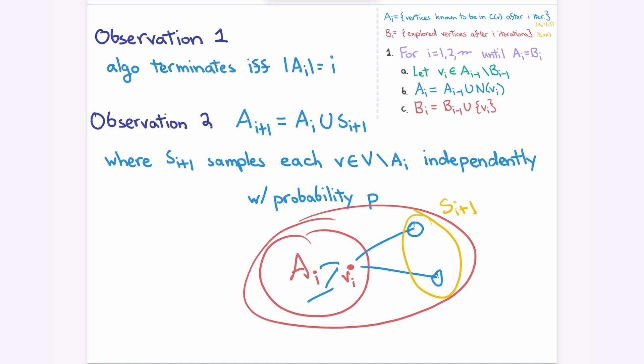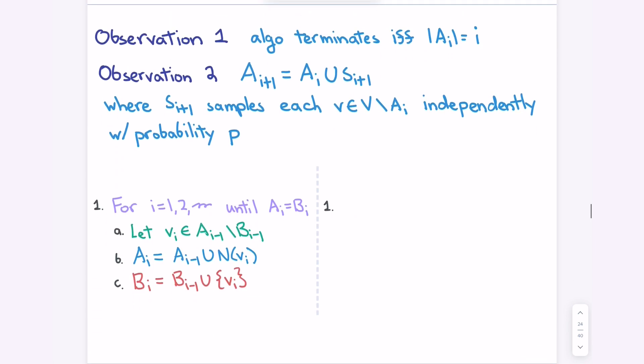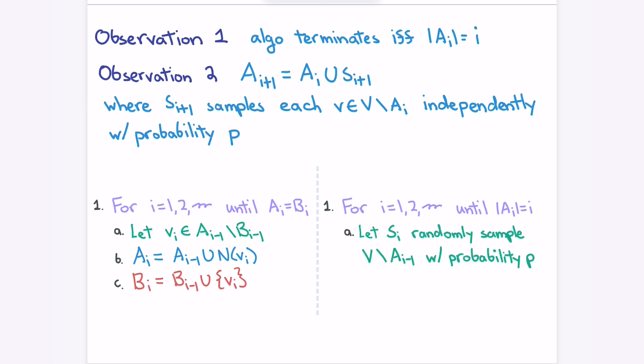We're rewriting the search algorithm in a way that has nothing to do with B_i. The termination condition is just based on A_i, and what happens in the next iteration is just based on A_i. The terminating condition just depends on the size of A_i, and we independently sample to try to add to A_i. This is the exact same process, but we've reduced the number of moving parts.